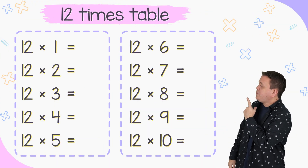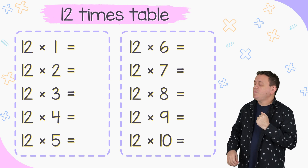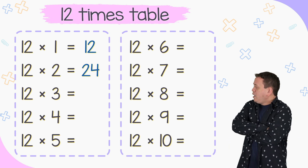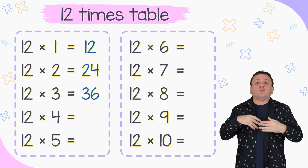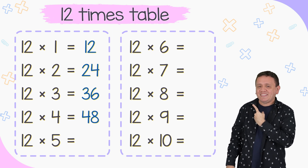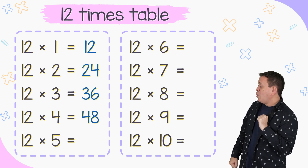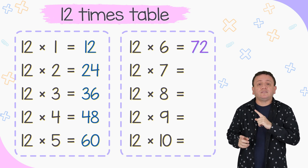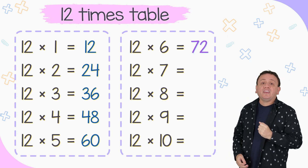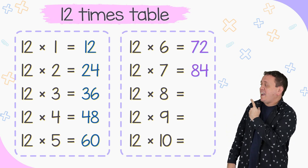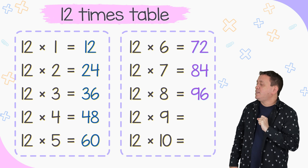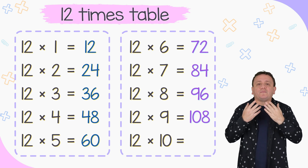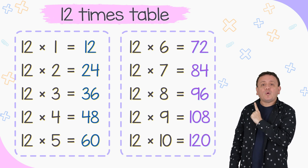Let's take a look at the 12 times table. 12 times 1 is equal to 12. 12 times 2 equals 24. And 12 times 3 equals 36. 12 times 4 equals 48. 12 times 5 equals 60. Let's jump to the next column. 12 times 6 is equal to 72. 12 times 7 equals 84. And 12 times 8 equals 96. 12 times 9 equals 108. And 12 times 10 equals 120.